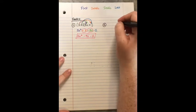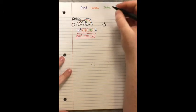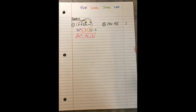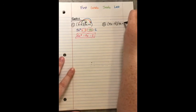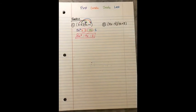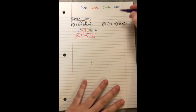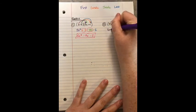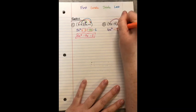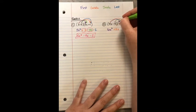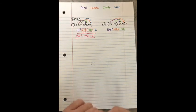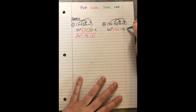Pause and try this next one yourself. We have (4x − 3)(4x + 3). Do your First, Outside, Inside, Last and see what you get as your simplified answer. Here we go: First — 4x times 4x is 16x². Outside — 4x times 3 is positive 12x. Inside — negative 3 times 4x is negative 12x. Last — negative 3 times positive 3 is negative 9.